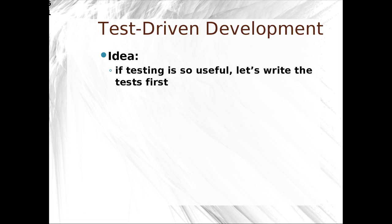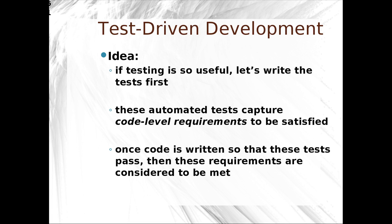All of this is related to test-driven development. Test-driven development is built around the idea that if testing is so useful, let's write the tests first. These automated tests are meant to capture code-level requirements that are meant to be satisfied. You design the API that you want to see. Once the code is written so that these tests pass, the requirements are considered to be met. This means you write tests in the style of the code you want to see, not the code you expect to get. When you code it, you write code that meets these tests.